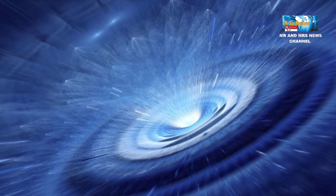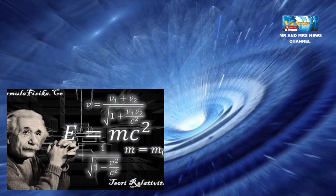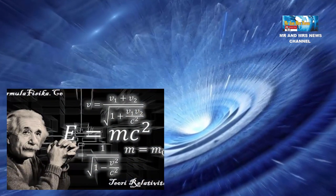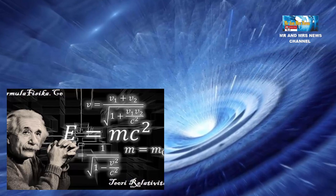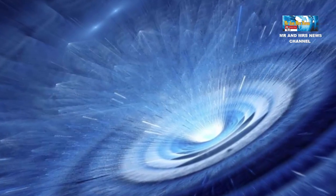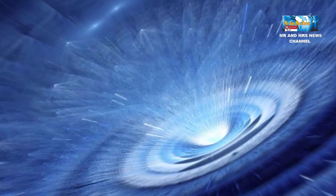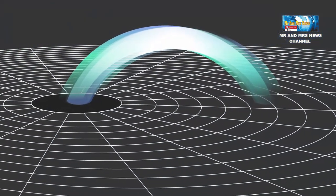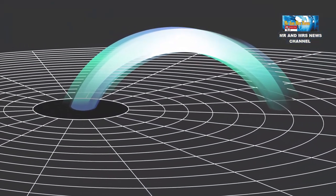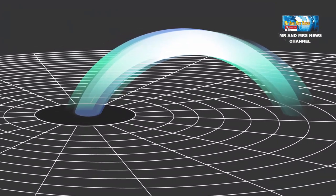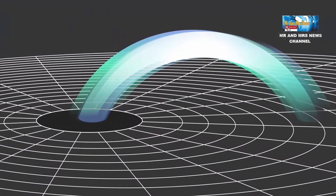Dalam teori relativitas umum Einstein, tidak ada partikel yang ada, hanya ruang waktu. Dan dalam model standar fisika partikel, tidak ada gravitasi yang ada, hanya partikel. Menghubungkan dua teori yang berbeda adalah masalah lama dalam fisika, sesuatu yang telah dicoba dilakukan orang sejak abad terakhir.